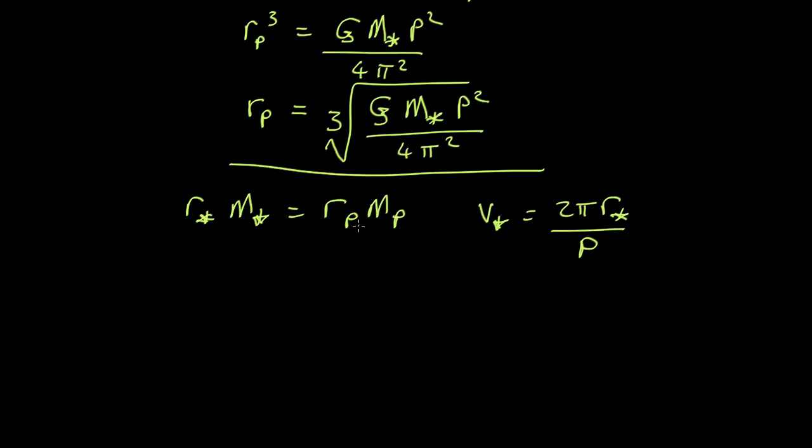So from this, let's say we knew the radius of the star's orbit. That tells us the mass of the planet is just equal to the mass of the star times the orbit of the star's radius over the orbit of the planet's radius, which is about the distance we've just worked out up here, r p.